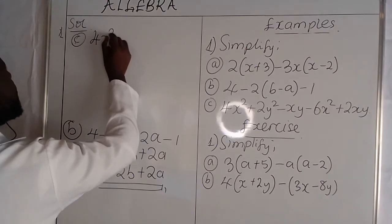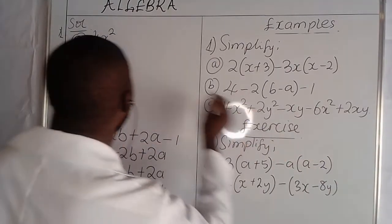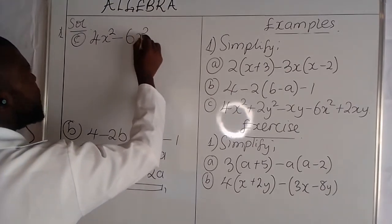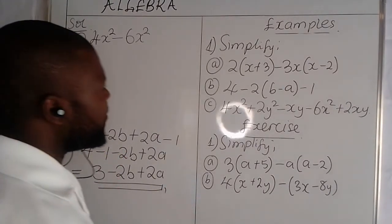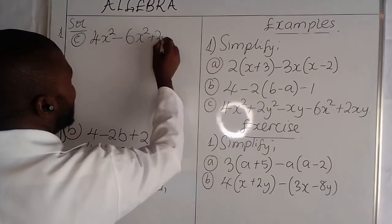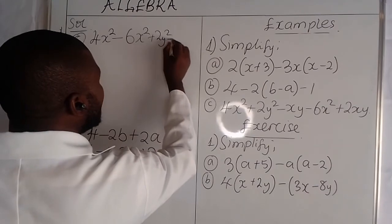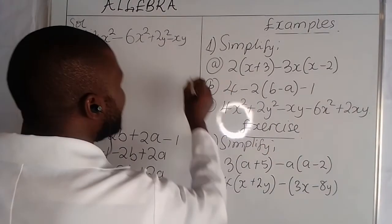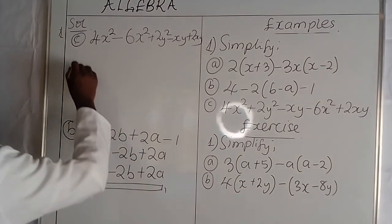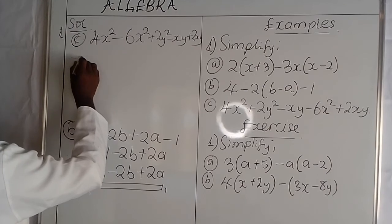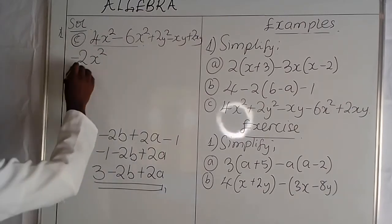So we have 4x squared. Do we have another term with the variable x squared? Yes — we have negative 6x squared. So it is a matter of rearranging: those which have the same variables we put them closer together. So 4x squared minus 6x squared gives us negative 2x squared. We have subtracted them and they have given us this result.